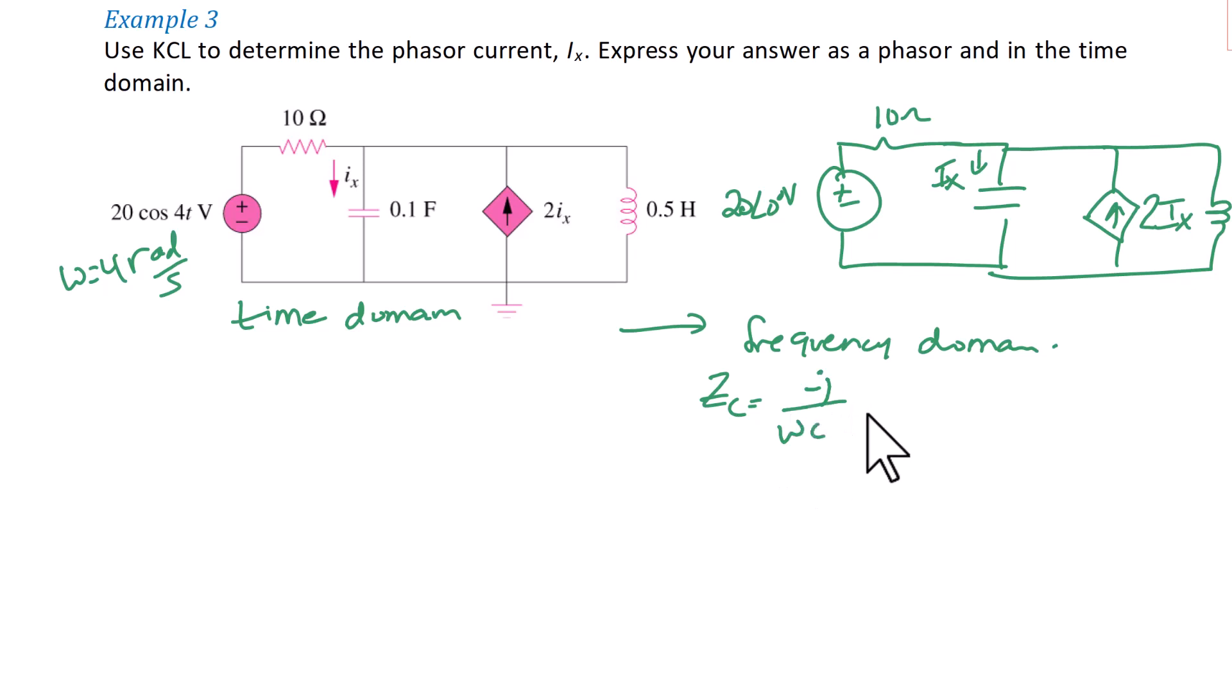The impedance of the capacitor is going to be negative J over omega C, or negative J over 4 times 0.1, which is equal to negative J 2.5 ohms.